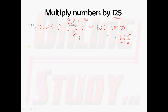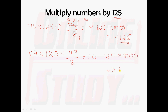We shall take an example of 117 into 125. This 117 should be divided by 8. You will get 14.625. And this 14.625 should be multiplied with 1000. So finally you will get 14625. So 117 into 125 is 14625.